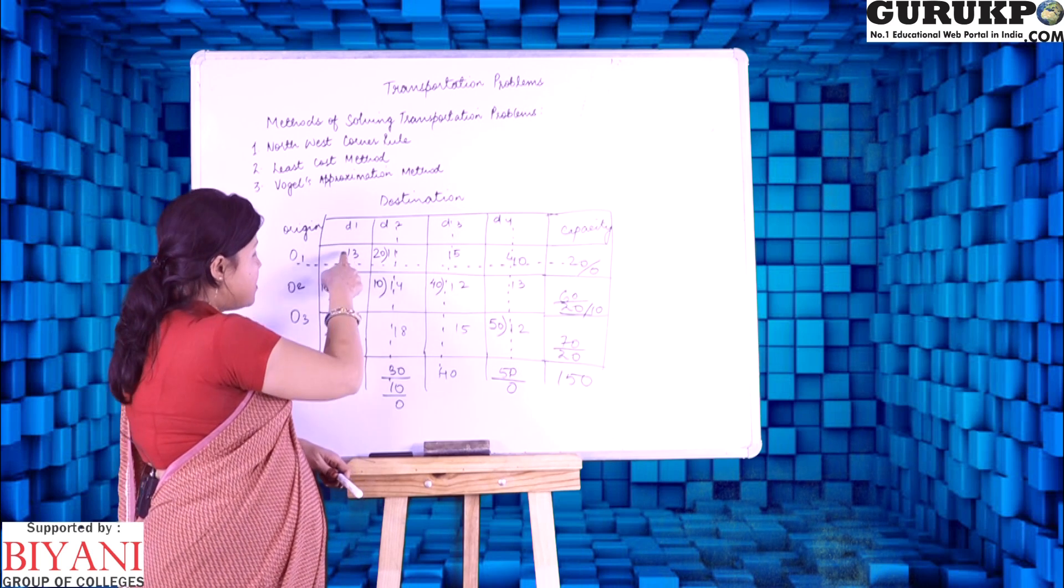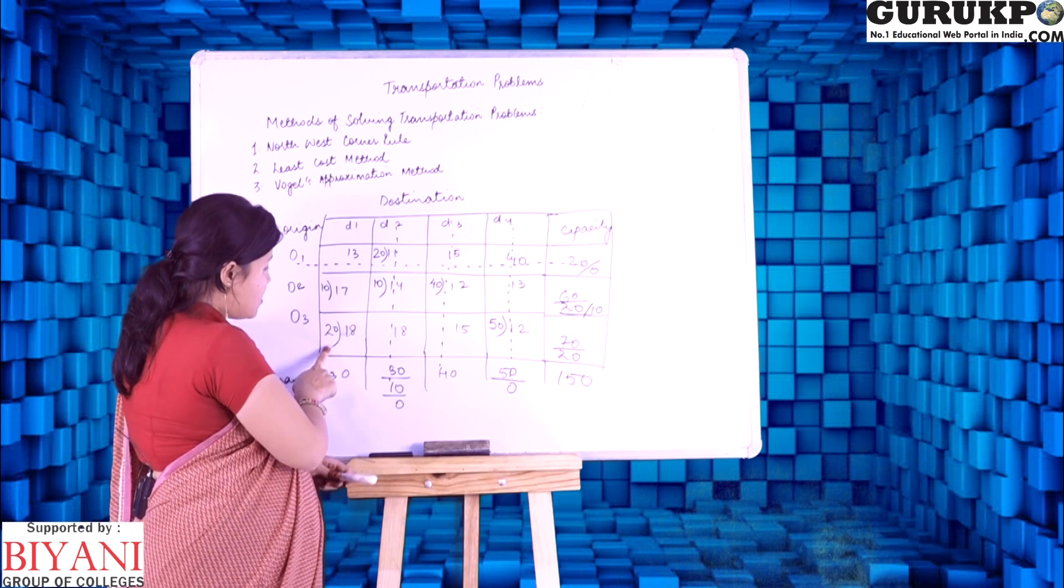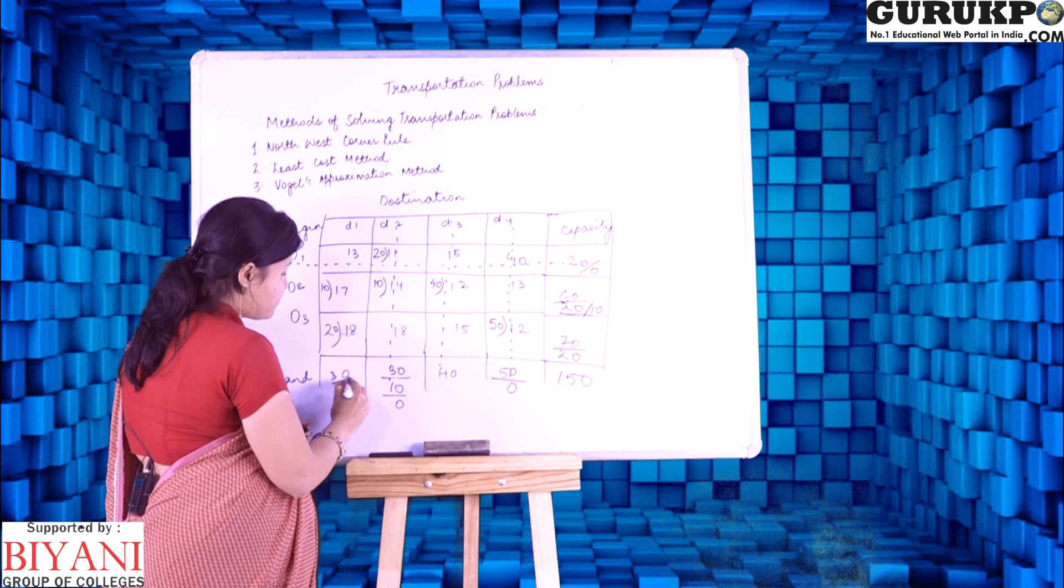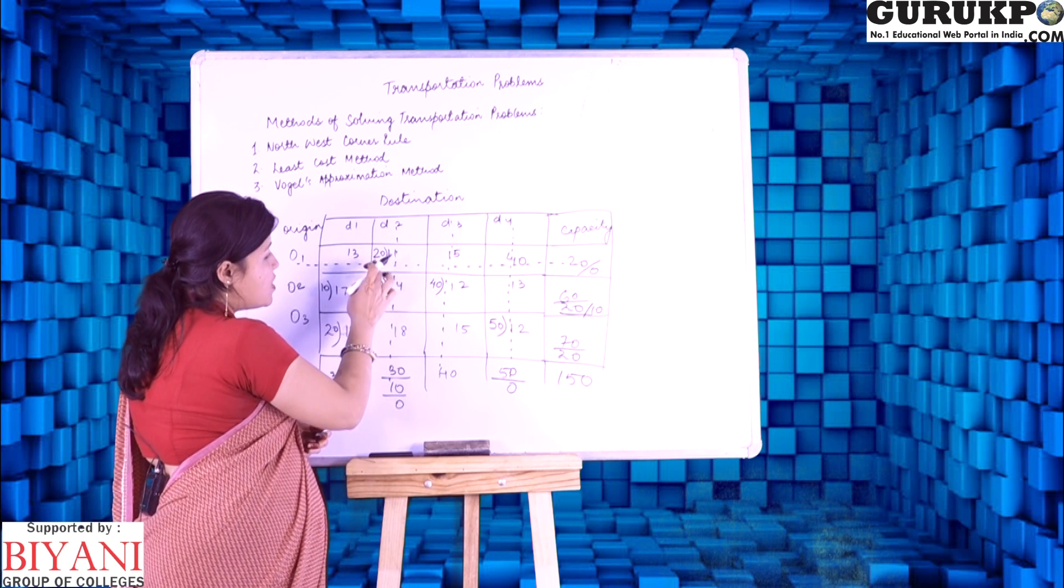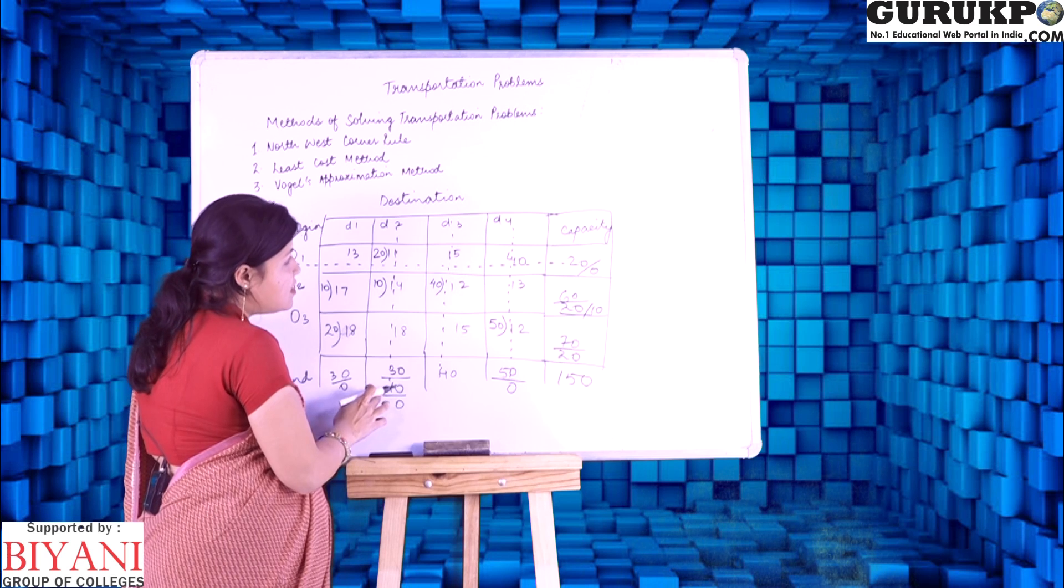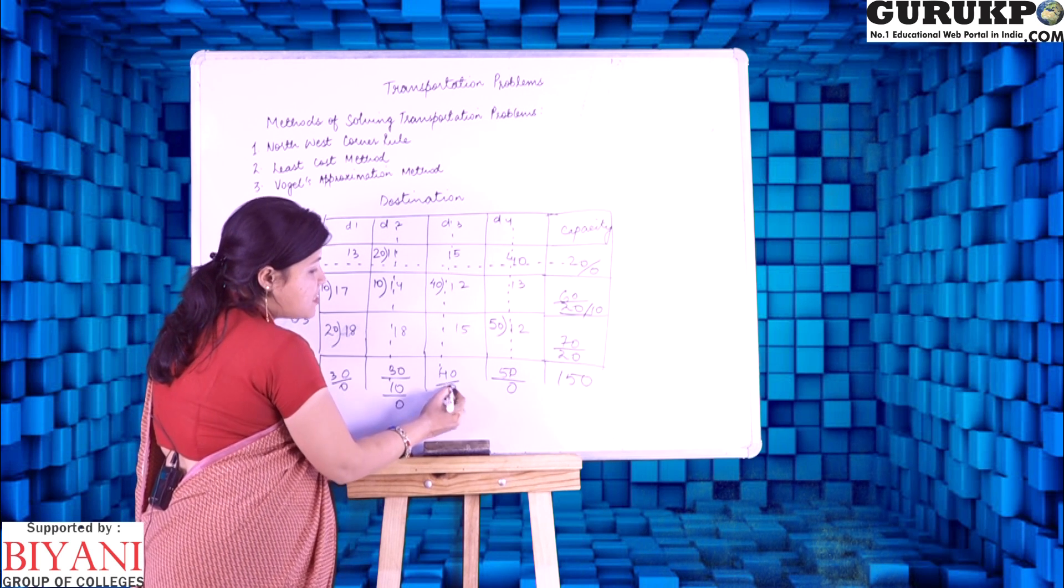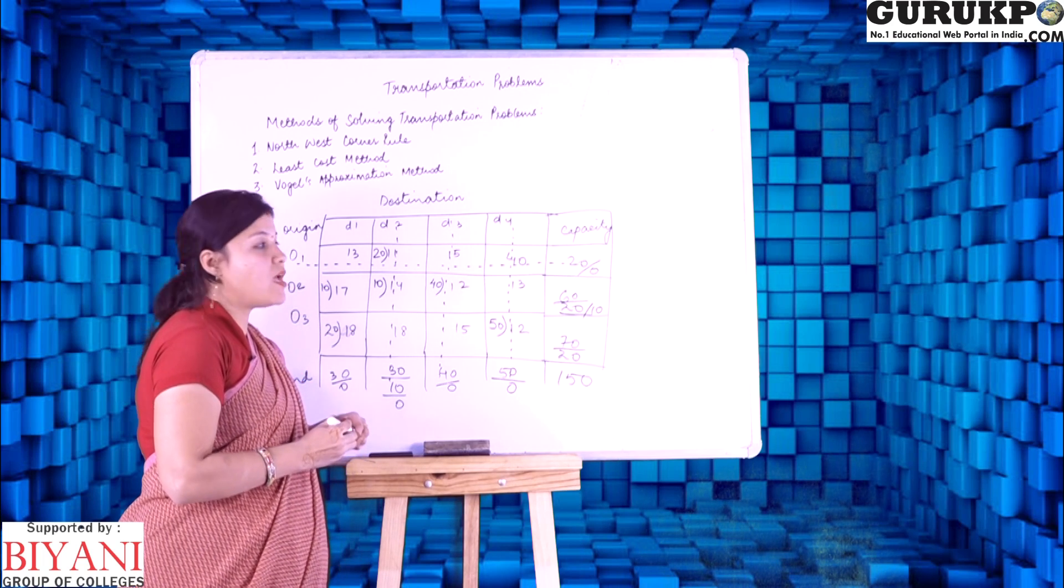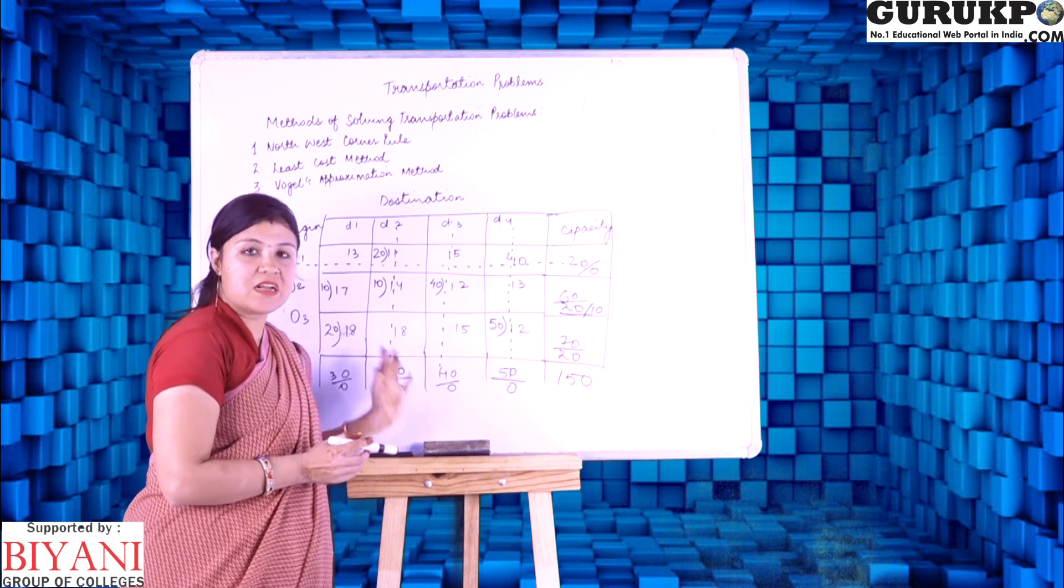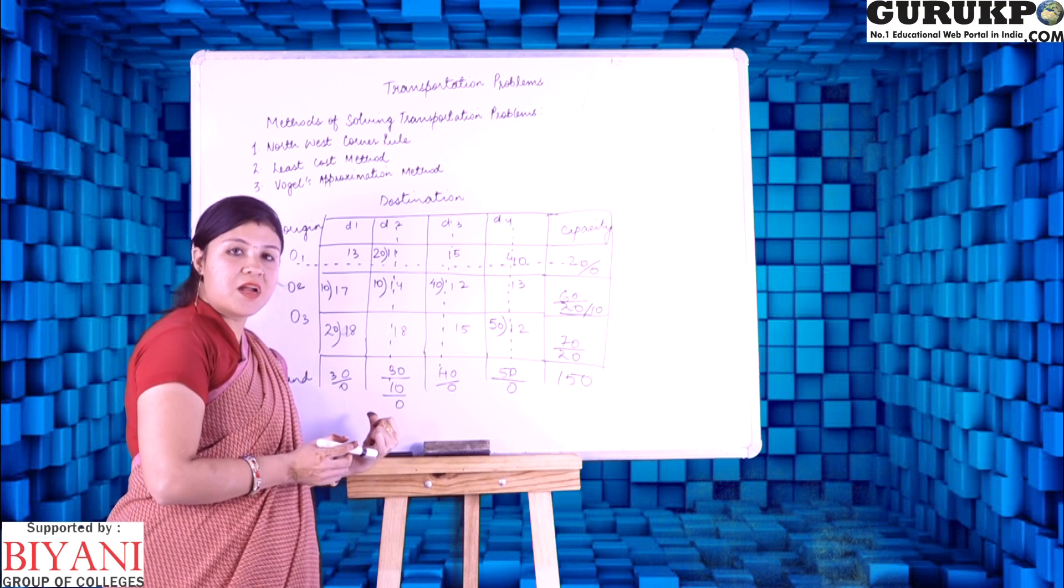Now, accordingly demand wise, here it is 30, 10 and 20 is 30. Now, here it is 20 and 10, it is 30. Now, next it is 40, it is 40 and next it is 50, it is 50. Now, the allocations are properly satisfied, the capacity and demand requirement.